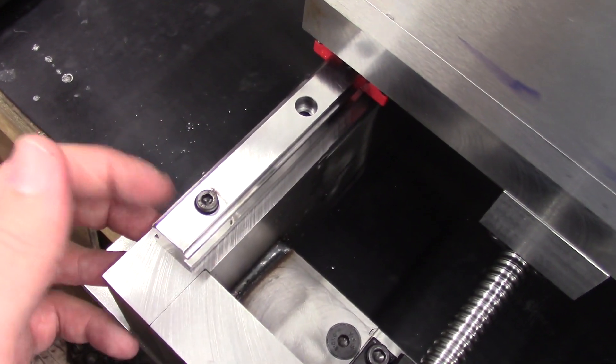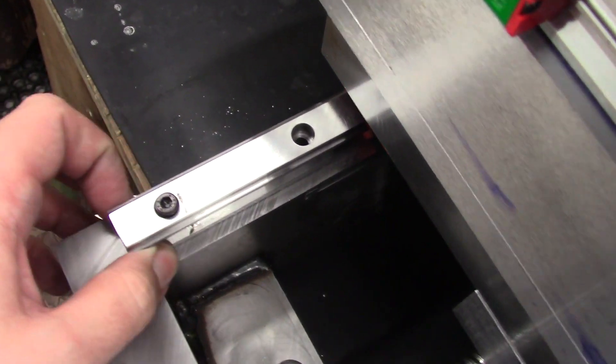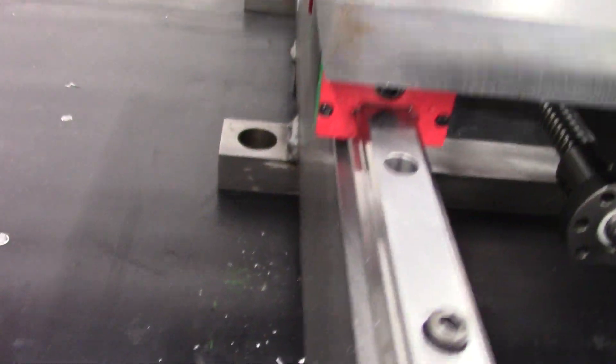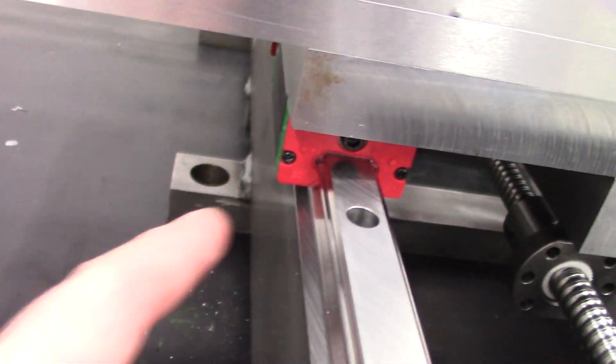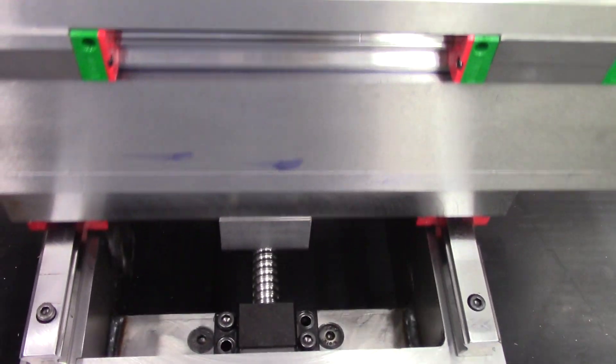On top of the base we've got some nice linear rails. These ones are Hiwin. And the carriages are under there, these red and green things. So they're what carry the axis forwards and backwards.